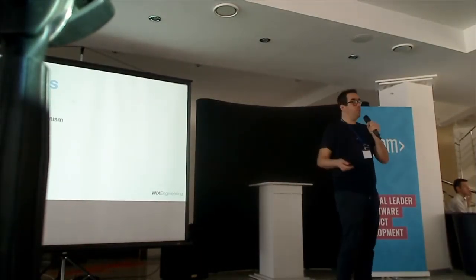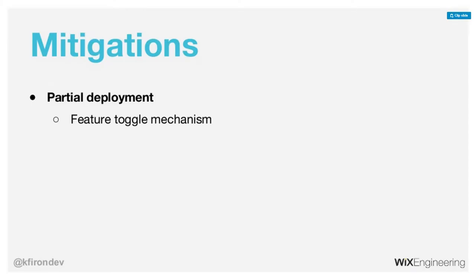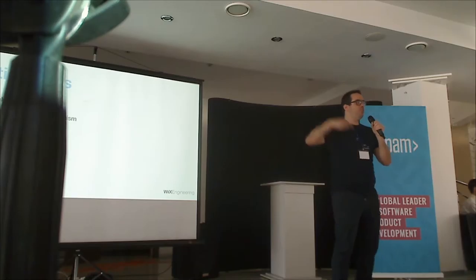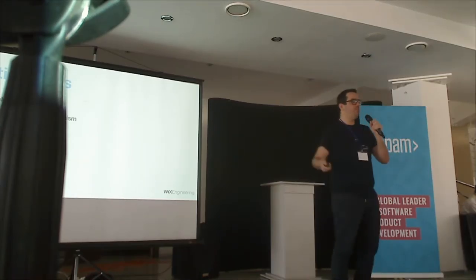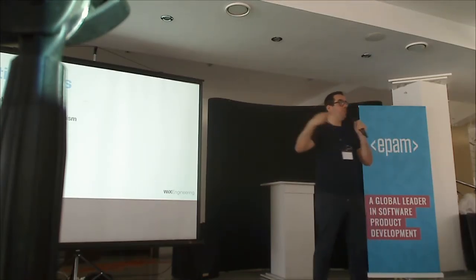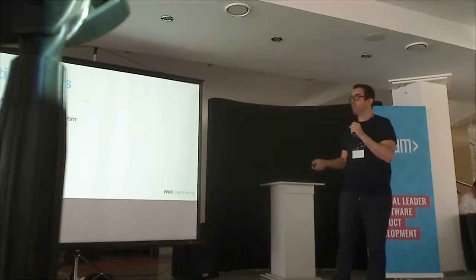For partial deployment, it's easy — you use feature tokens or feature switches in your system. You deploy the version across multiple servers, the feature is deployed but disabled, and then you open it gradually.